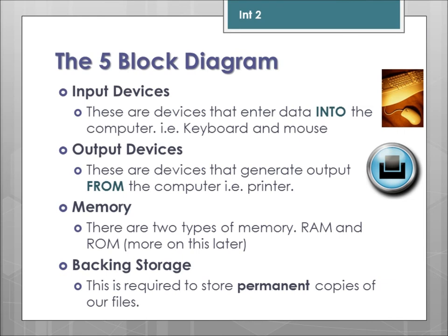Just to summarise: we've got the input devices, which are devices that enter data into the computer — i.e. keyboard and mouse. Output devices are devices that generate output from the computer. Memory has two main types: RAM and ROM, a bit more on this later. And backend storage — we require this to store permanent copies of our files. Without this, you would have to re-enter data every single time.